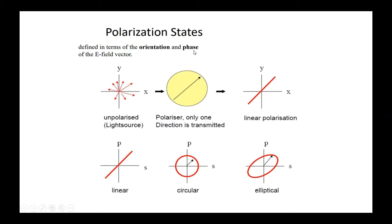Polarization is a state defined in terms of orientation and phase. Unpolarized light passes through the polarizer and gets linearly polarized. This is linearly polarized light. This is circularly polarized light, and this is elliptically polarized light.